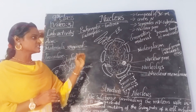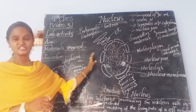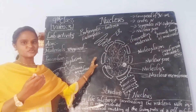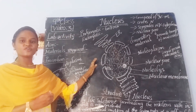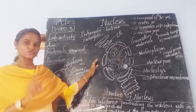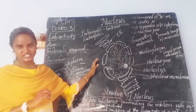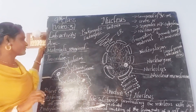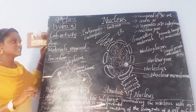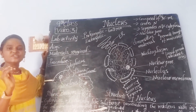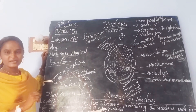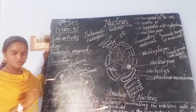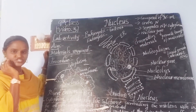Before discussing the different parts and functions of the nucleus, today we are going to do a lab activity. The aim of the lab activity is to observe the nucleus present in our cheek cells. You know what the cheek is — this part of your face.